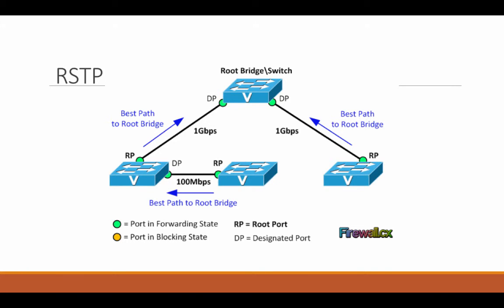Let's get on Packet Tracer now, back on our network, and do some RSTP examples. We're going to have to add in some switches here to create a loop, and then we'll go through STP, PVSTP, and RSTP and the setup of each one.